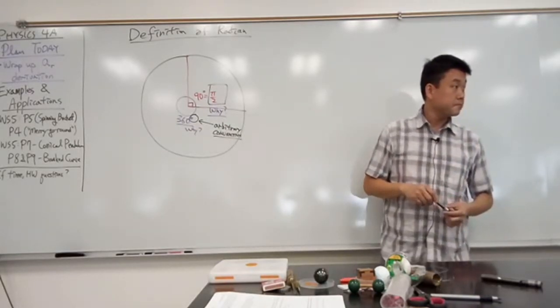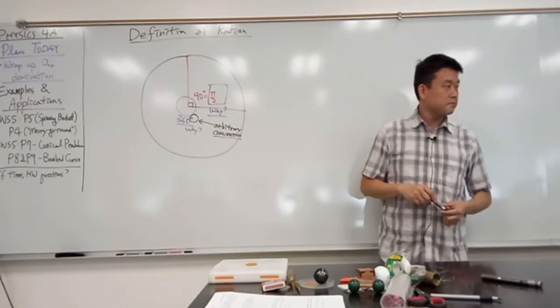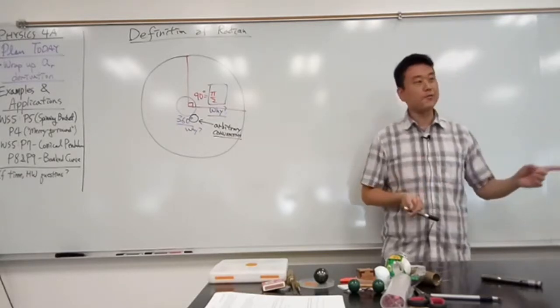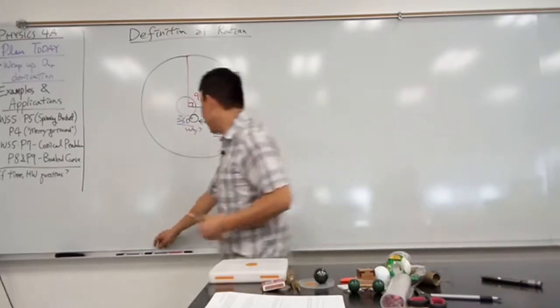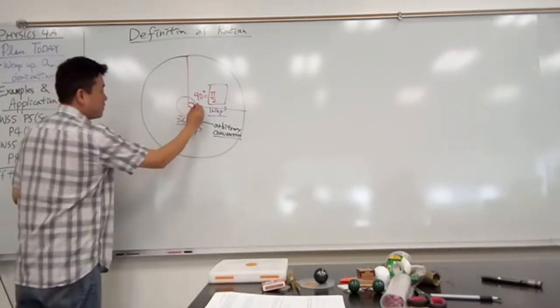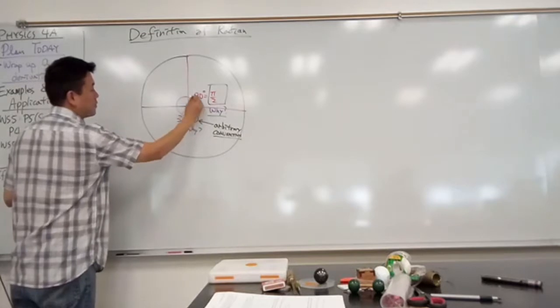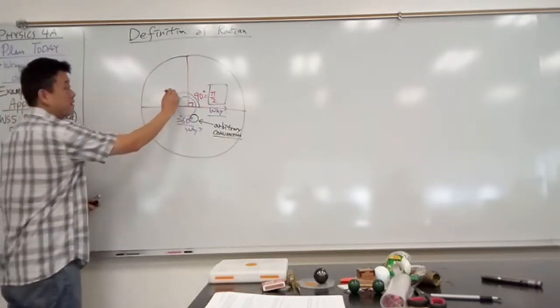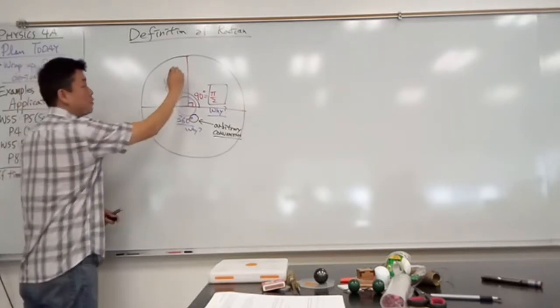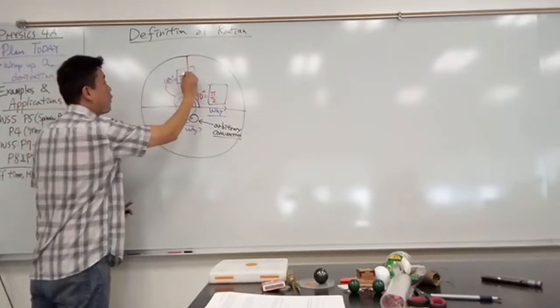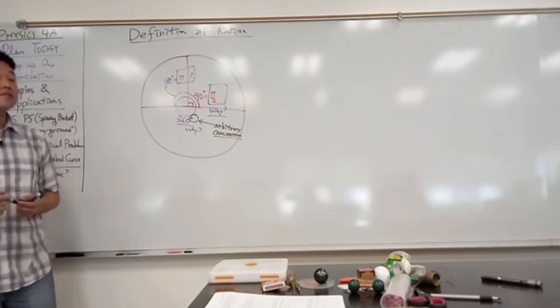So pi equals 180 degrees, so 90 degrees. Okay, let me ask you this question then. Why is 180 degrees pi? So what Alice is saying is that from here to here, so essentially a straight line, that 180 degrees corresponds to pi. But still the same question. Why is it pi? Why not 2 pi? Why not 4 pi?